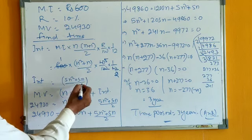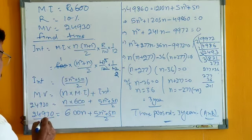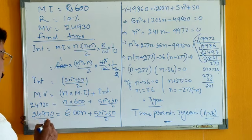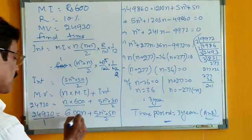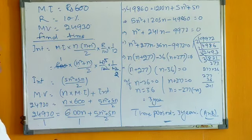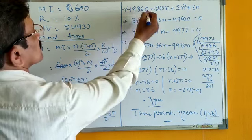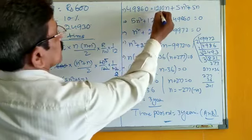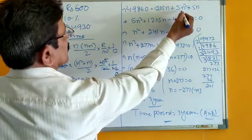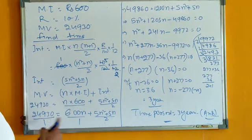Interest is 5N square plus 5N by 2. Now, 24930 by 1, which is equal to 600N by 1 plus 5N square plus 5N by 2. Take LCM and cross-multiply, so that it becomes 49,860 equals 1200N plus 5N square plus 5N.